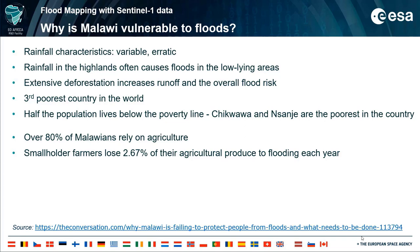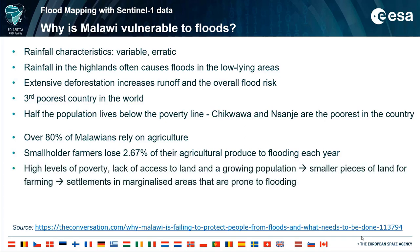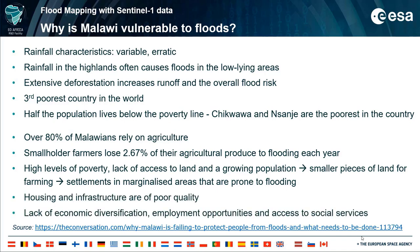Recent research shows that smallholder farmers lose 2.67% of their agricultural produce to flooding each year. High levels of poverty, a lack of access to land, and a growing population mean people have smaller pieces of land for farming. This has led to settlements in marginalized areas that are prone to flooding. Housing and infrastructure are of poor quality, and there is a lack of economic diversification, employment opportunities, and access to social services. This means that people are limited in how they can prepare for a possible flood and recover after it has happened.